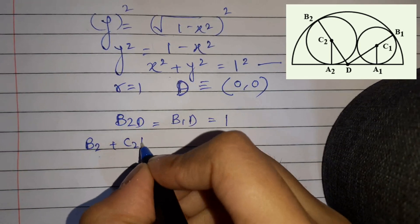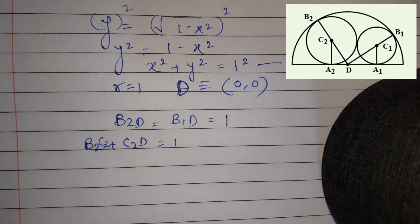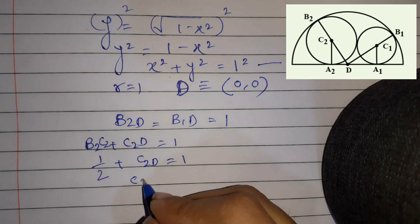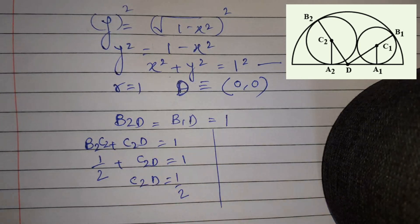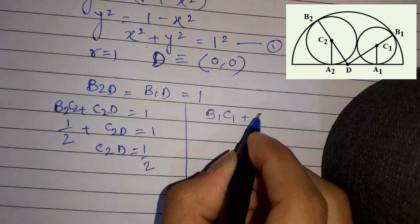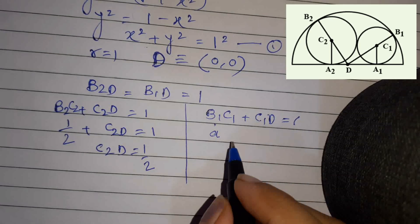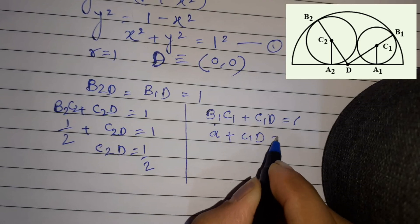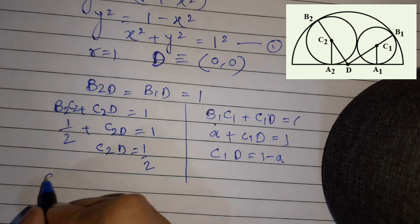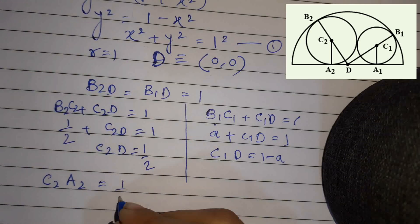Since C2 lies on the semicircle internally, we have: C2D = 1 - radius of S2. The radius of S2 is 1/2, so C2D = 1 - 1/2 = 1/2. Similarly, C1D = 1 - radius of S1 = 1 - a.